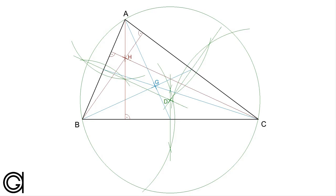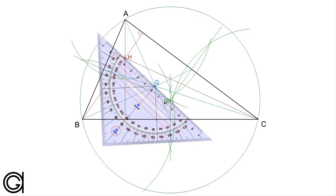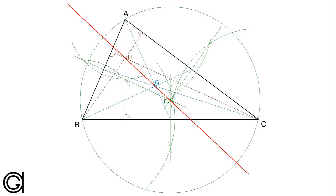If we have been working with precision and accuracy, Euler's line should pass perfectly through these three notable points, and as you can see we will draw it here with a red line. One notable aspect of Euler's line is that the centroid point G is between the circumcenter point D and the orthocenter point H. The distance from the orthocenter point H to the centroid point G is always double the distance from the centroid point G to the circumcenter point D — in other words, HG is always double GD. I hope you have enjoyed this video; please press like or subscribe to our YouTube channel. Thank you.